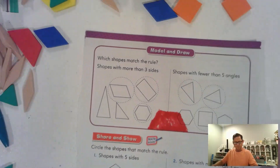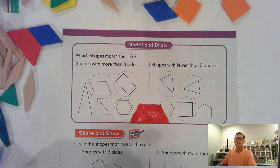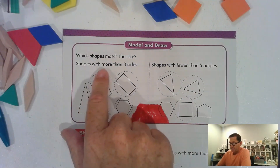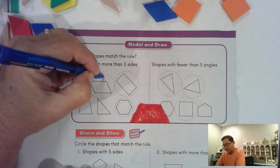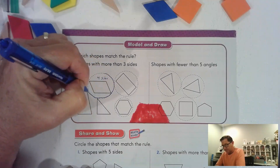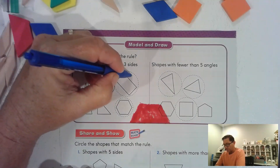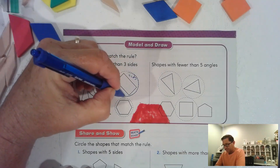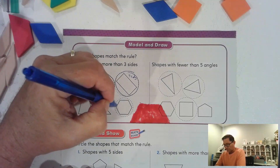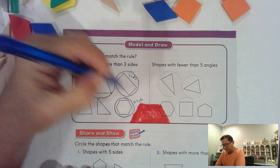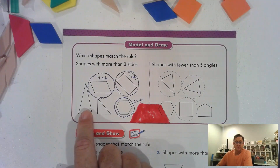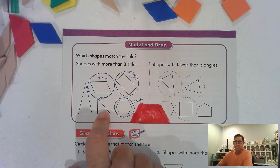Let's look on page 542 now. Which shapes match the rule? The rule is shapes with more than three sides. This one has four sides, so it's circled. This one has four sides. One, two, three, four, five, six — this one has six sides. This one only has three sides, so it's not more than three. Neither is this one.